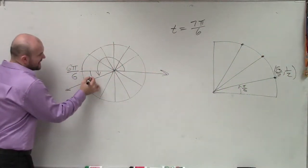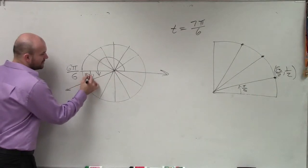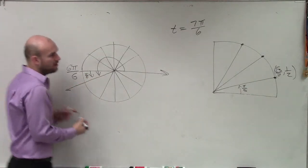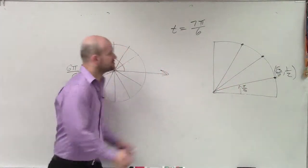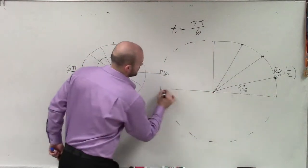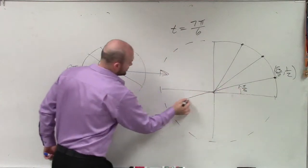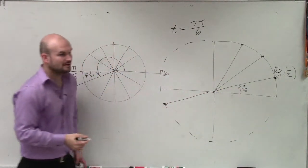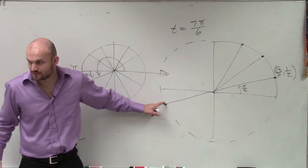And I know that from here down, that reference angle is pi over 6. So all I have is this angle is a direct reflection over here. So now, yes, what's going to be negative? Which coordinates?